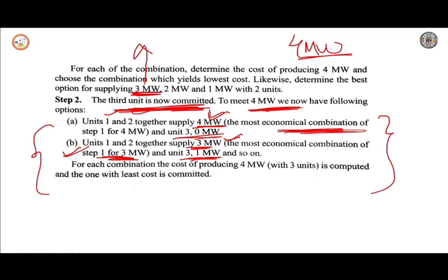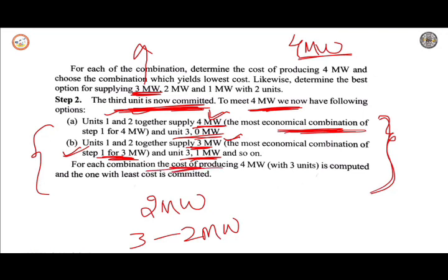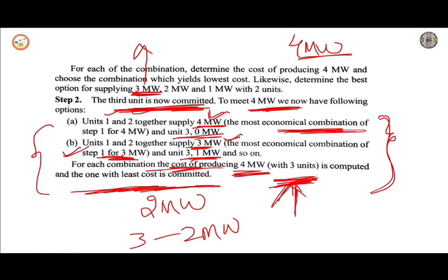These combinations continue. For each combination, the cost of producing 4 megawatts with 3 units is computed. Whatever 3-unit combination has the least cost is committed. The most economical combination for supplying each load level from step 1 is used along with the appropriate output from unit 3. This is step 2.